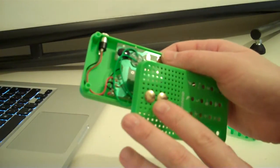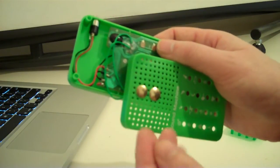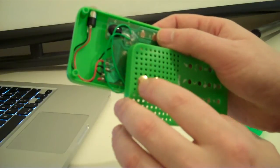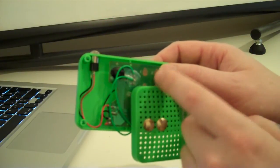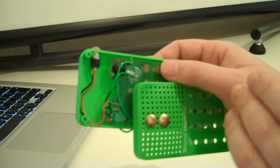And the way that this works is the more contact you've got with this metal here with your finger and the sweatier your finger is and the harder you press, the lower the resistance is between these two points. And in this case, that means that the playback is faster and you get a higher pitch.